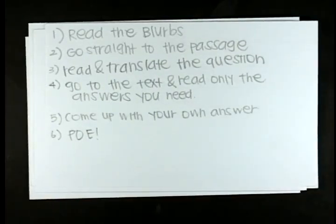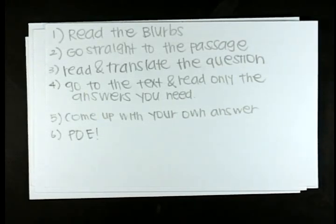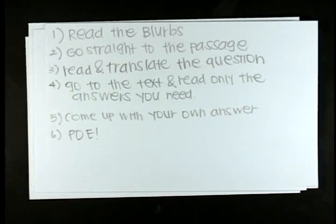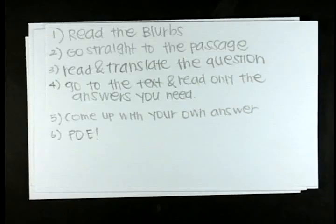1. Read the blurbs. 2. Go straight to the passage. 3. Read and translate the question. 4. Go to the text and read only the answers you need. 5. Come up with your own answer. 6. POE, which is process of elimination.